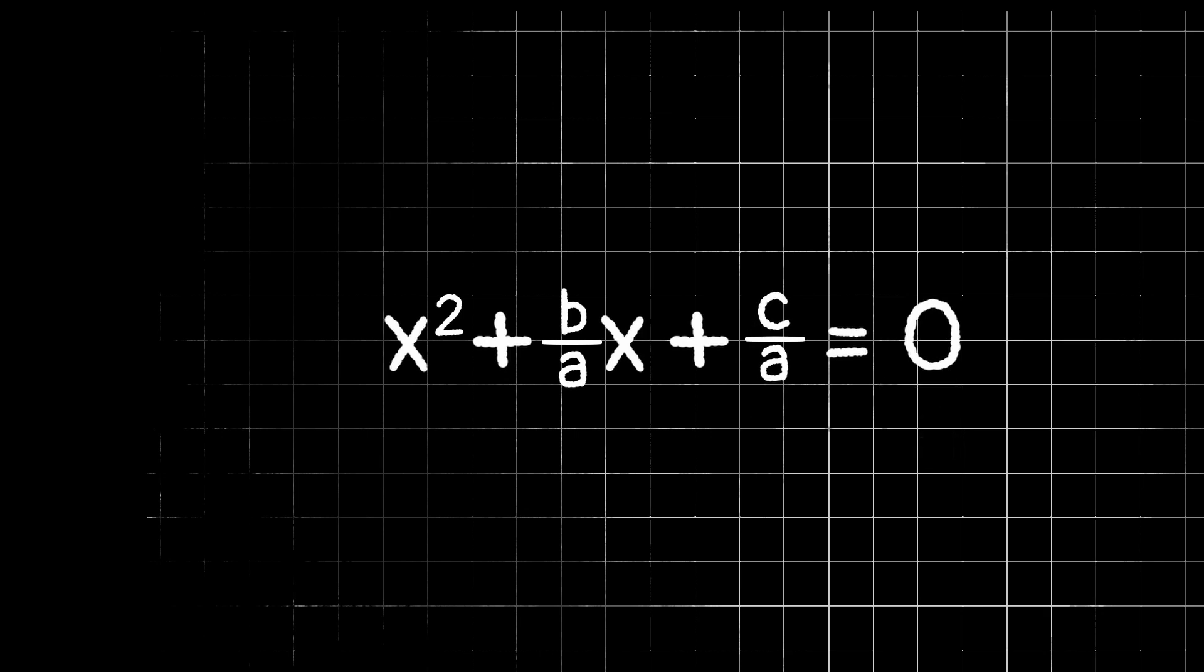From here, depending on the numbers in your equation, you might be able to factor. Factoring is often a lot faster and simpler than using the quadratic formula or completing the square or using other strategies. But remember, in this case, we don't know the values of a, b, and c. So we don't know if we can factor. So we're going to use a strategy that will work no matter what.